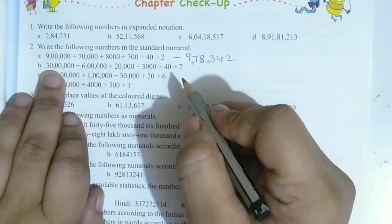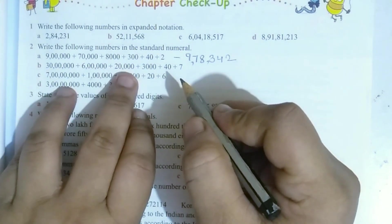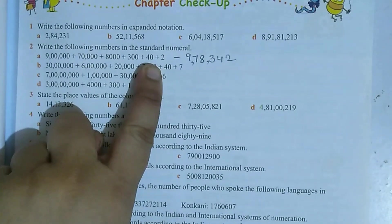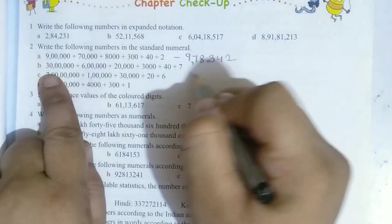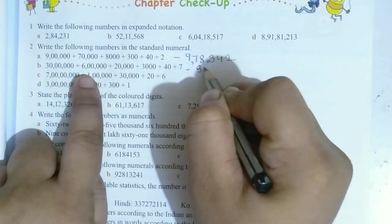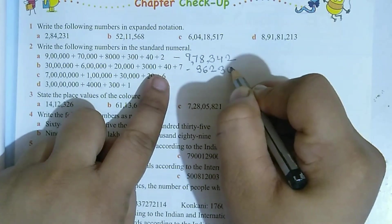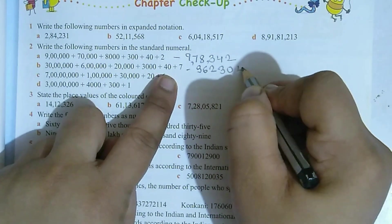See the next one here: 1, 2, 3, 6 zeros, 5 zeros, 4 zeros, 3 zeros, but 2 zeros is not there. So 2 zeros means 100 place is missing and it will be 0. So write down 3, 6, 0, 2, 3, then 0 for 100, then 8, 4.